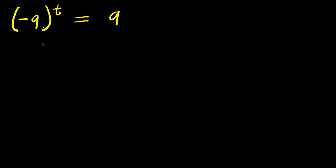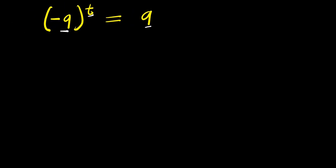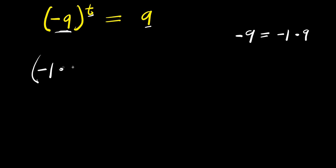Hello, how to solve this exponential problem: negative 9 to the power of t equals 9. We are solving for the value of t that satisfies this equation. We are going to make use of two different methods. So negative 9 can be written as negative 1 times 9, raised to the power of t, and this equals 9.